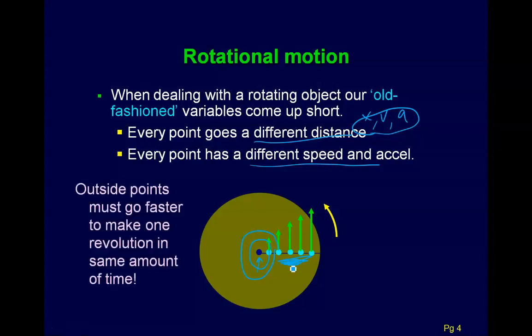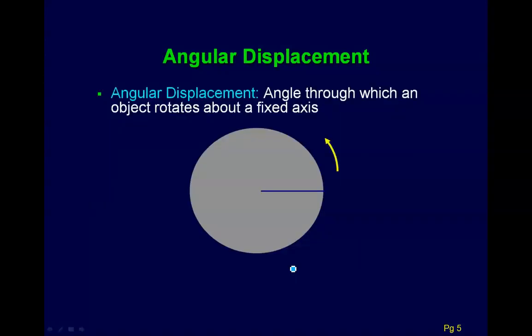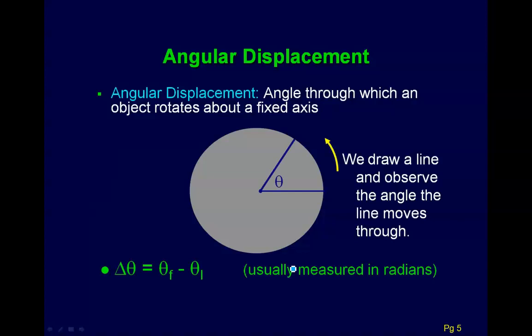So we created new angular rotational values. All these points are going to go through the same angle — the same amount of radians in the same amount of time, the same number of revolutions in the same amount of time. We define the angular displacement, which is usually measured in radians. Two points travel different linear distances, but they'll travel the same amount of radians — the same angular distance.